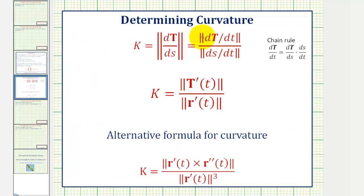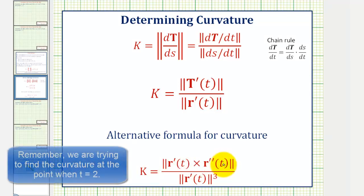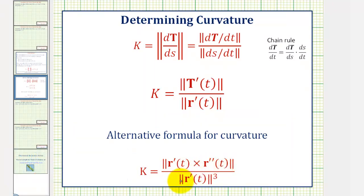We'll be using one of these formulas here. More specifically, we'll be using this alternative formula for curvature, where we have the magnitude of the cross product of r prime of two crossed with r double prime of two, divided by the magnitude of r prime of two cubed.